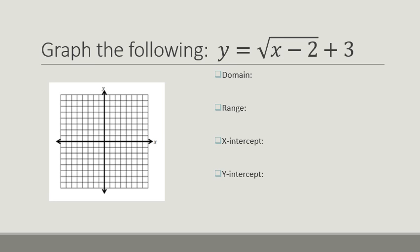So let's go ahead and graph this. So if my parent function starts at 0, 0, I'm going to go right 2 and I'm going to go up 3. And that's where it's going to start our graph.